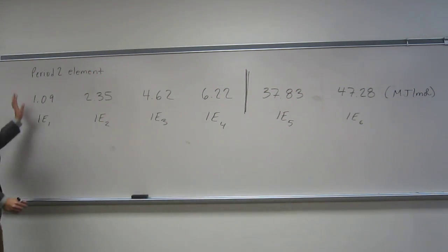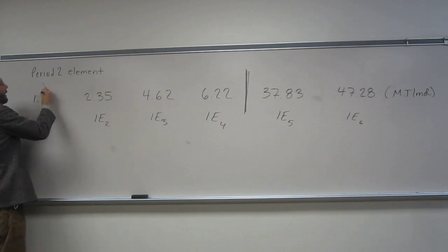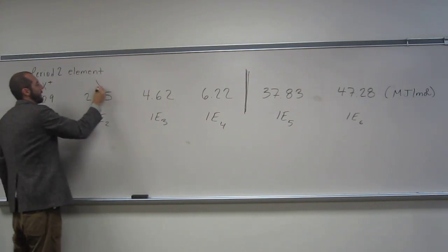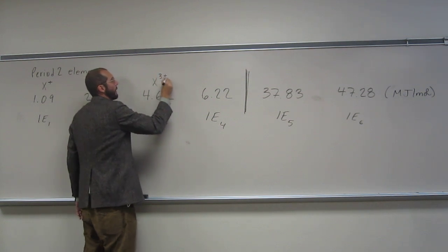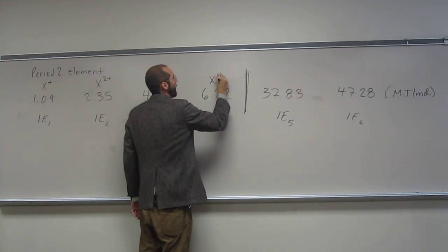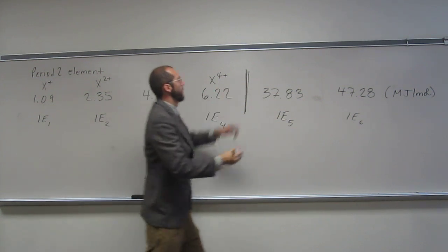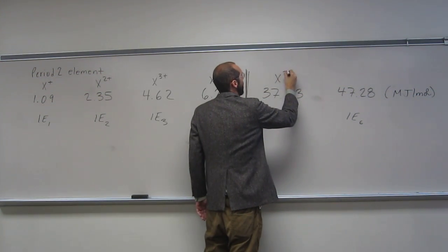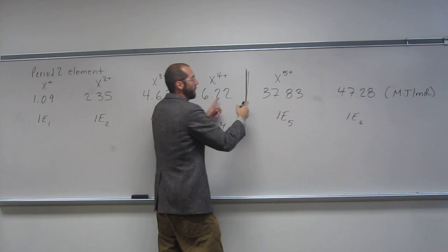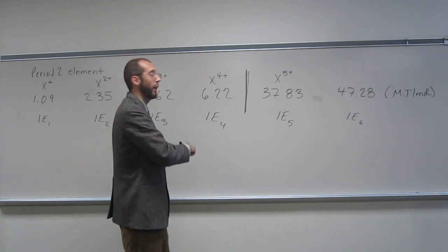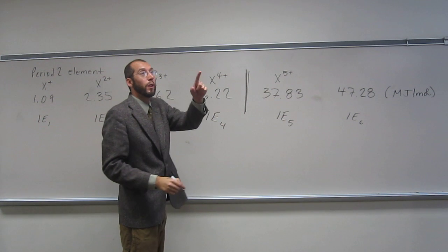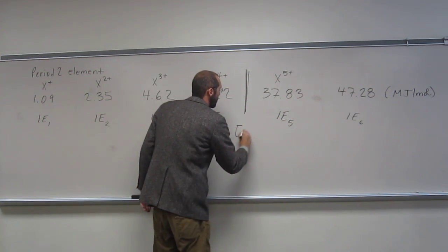Well, we're looking for a period 2 element. So this is x+, x2+, x3+, x4+, and then this would be x5+, right? So in between x4+ and x5+, we went down to the noble gas. Since we're at period 2, the noble gas configuration that we got to is helium.